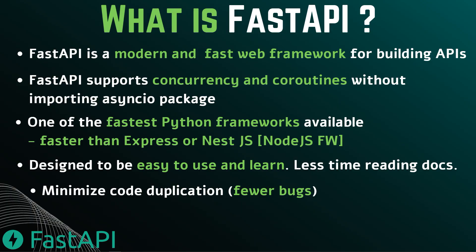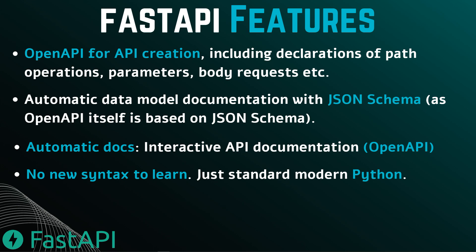FastAPI is designed to be easy to use and learn, which means less time reading documentation and more time to produce. It also minimizes code duplication, which results in fewer bugs. It's a robust framework with automatic interactive documentation. One key feature is Open API, which makes the creation of APIs very easy, including declarations of path operations, parameters, request bodies, etc. It also has automatic data model documentation with JSON schema.